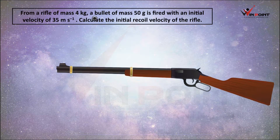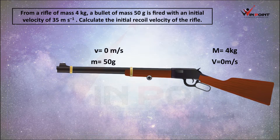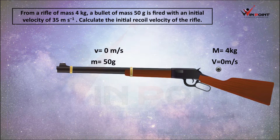From a rifle of mass 4 kg, a bullet of mass 50 grams is fired with an initial velocity of 35 m/s. Calculate the initial recoil velocity of the rifle. Before firing, the bullet is at rest inside the gun. We need to apply the law of conservation of momentum.